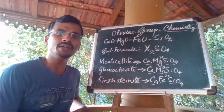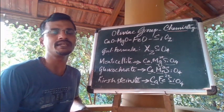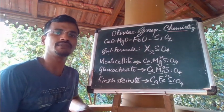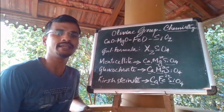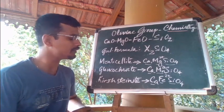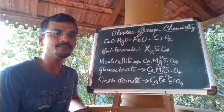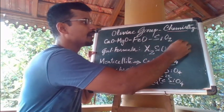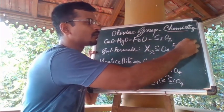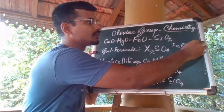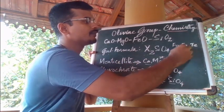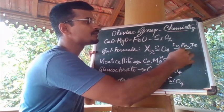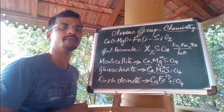We usually use abbreviations and subscripts to indicate olivine composition. For forsterite we use Fo, for fayalite we use Fa, for tephroite we use Te, and for larnite we use La. These are the short forms that we use to represent the minerals.